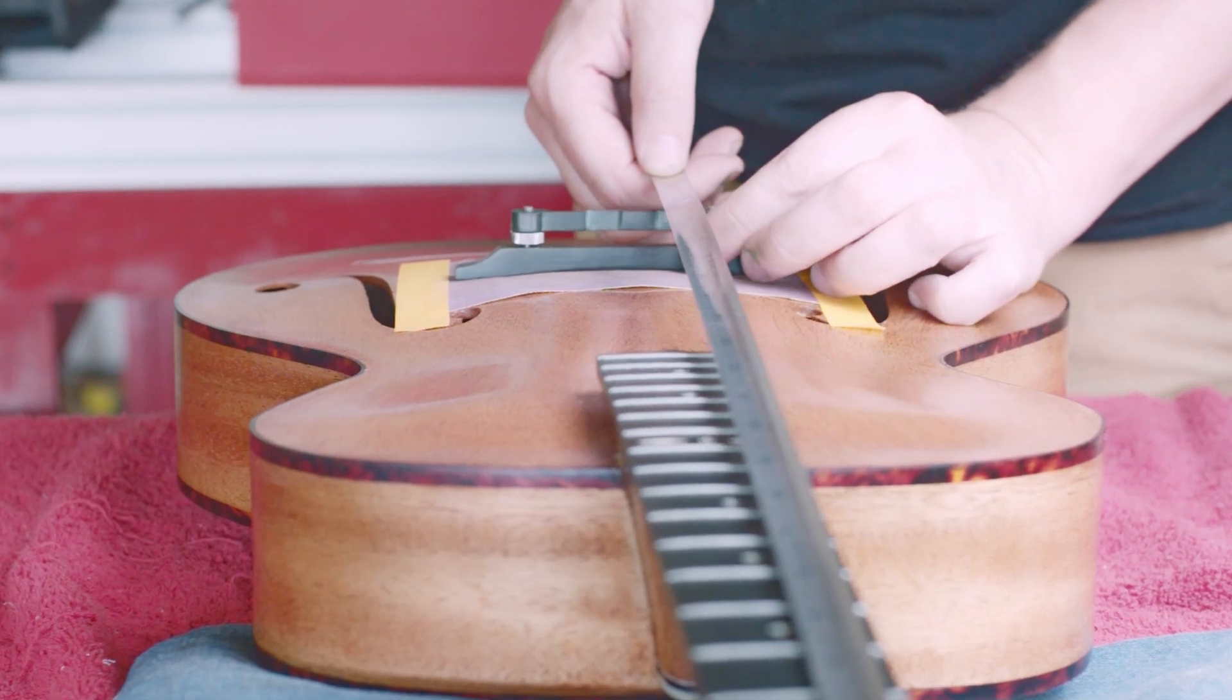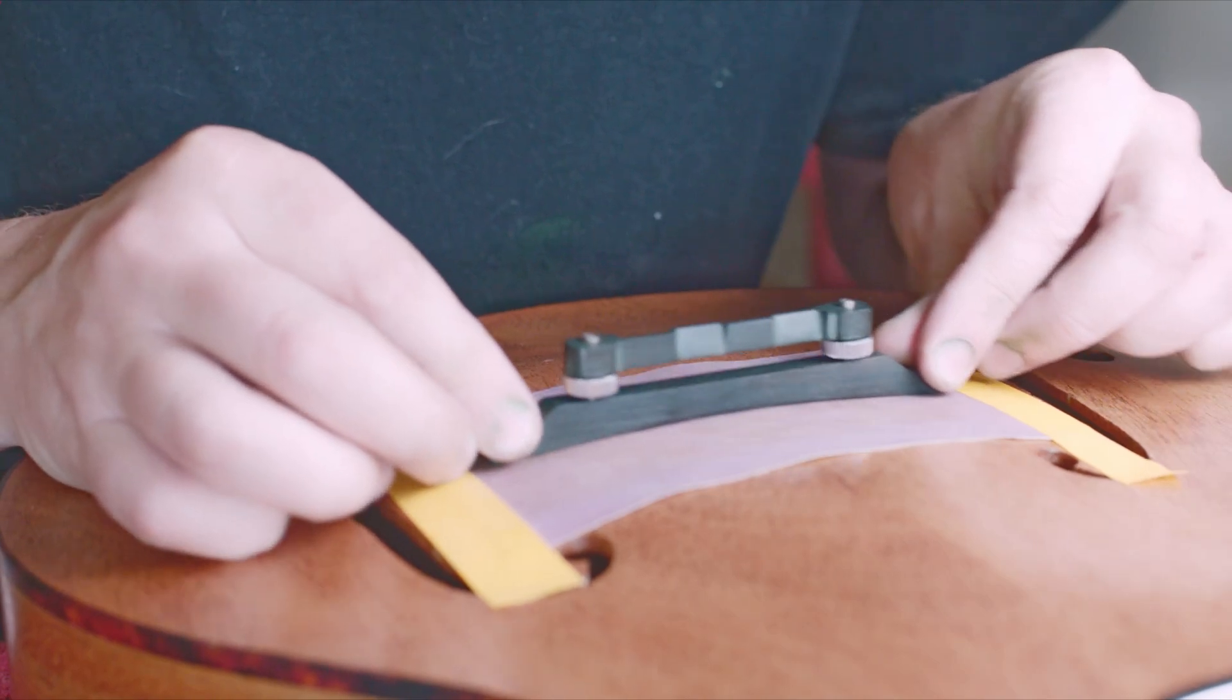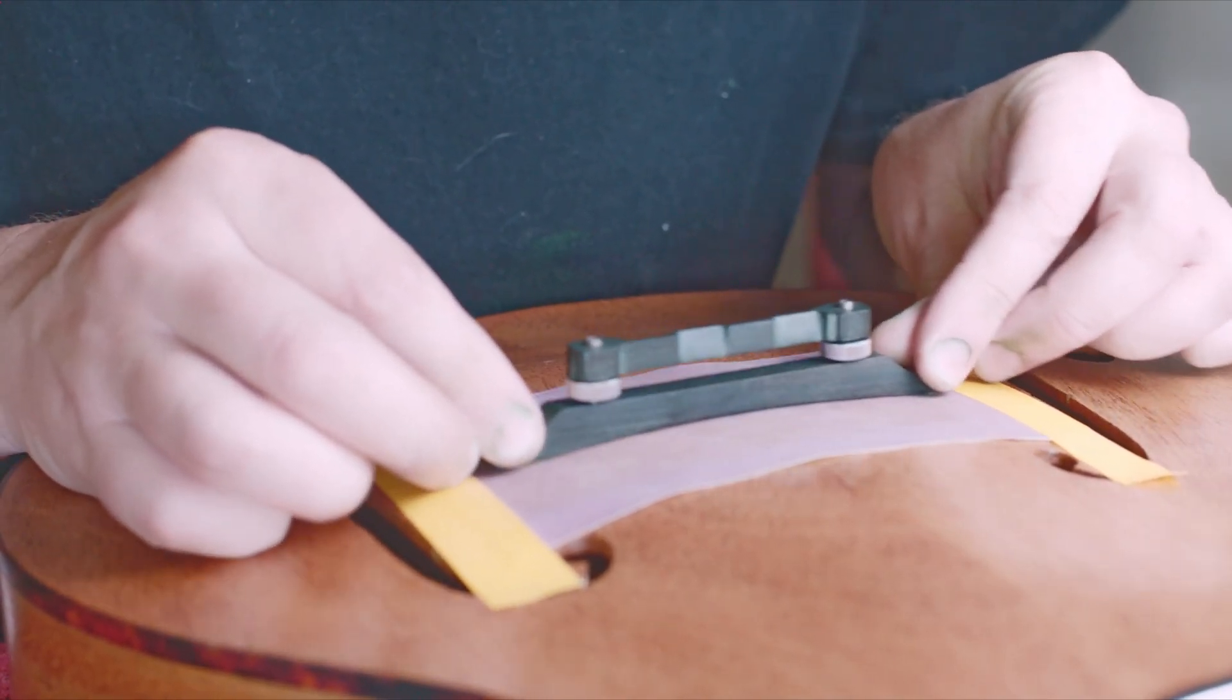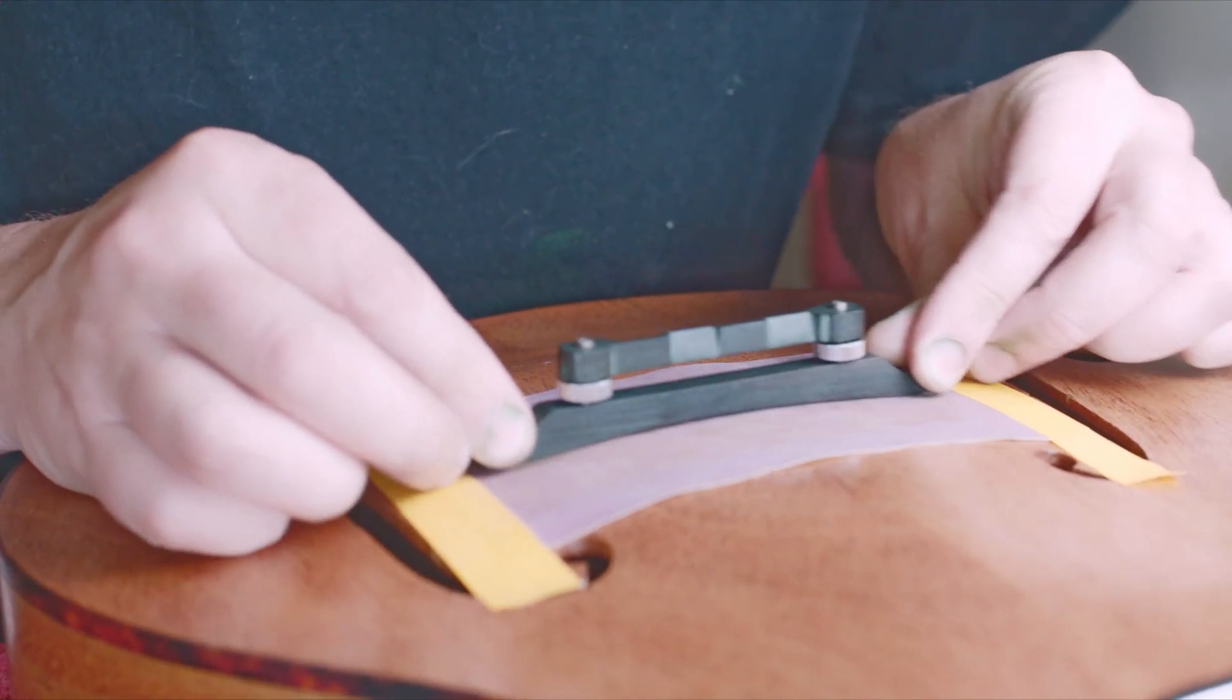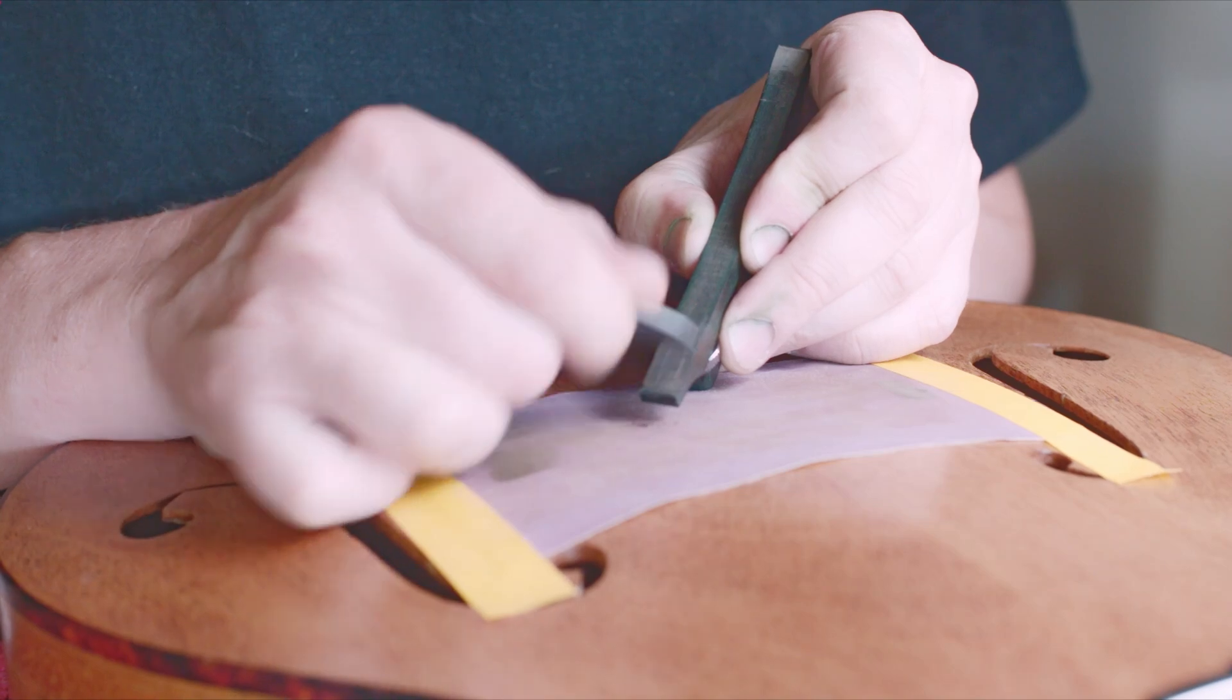I carefully sand the feet of the bridge and ensure they are in the correct position according to the scale length. Afterward, I use a scraper to remove additional material from the designated spots. With any luck, these areas will gradually expand until the bridge fits perfectly.